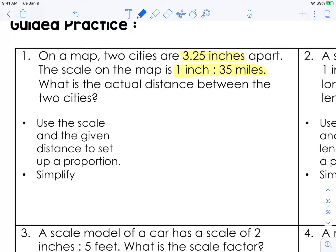So we're going to take the scale first. We know that one inch is equal to 35 miles. And we know these two cities on the map. So again the map is at the top. The model map or models is at the top. And the actual at the bottom is 3.25 inches. And then we want to find that actual distance. We don't know that. So you'll cross multiply.